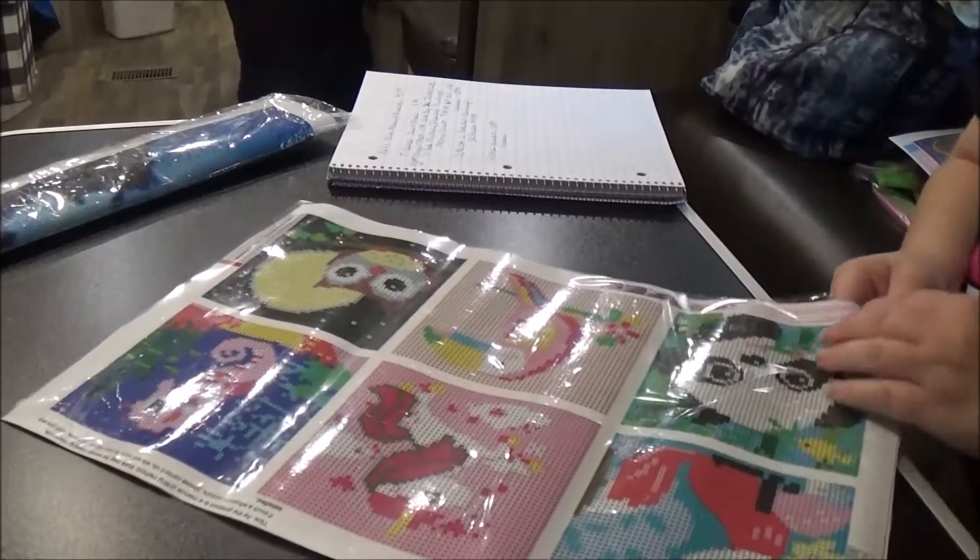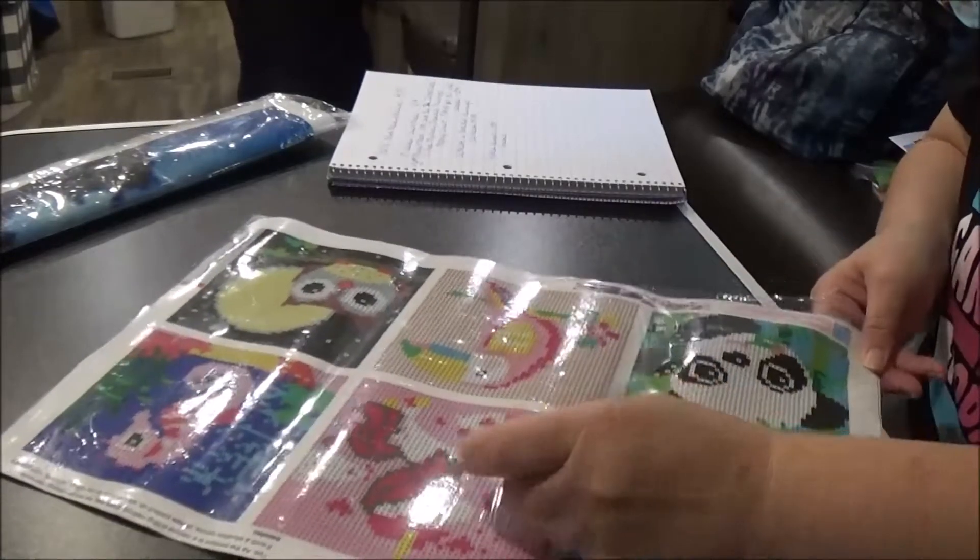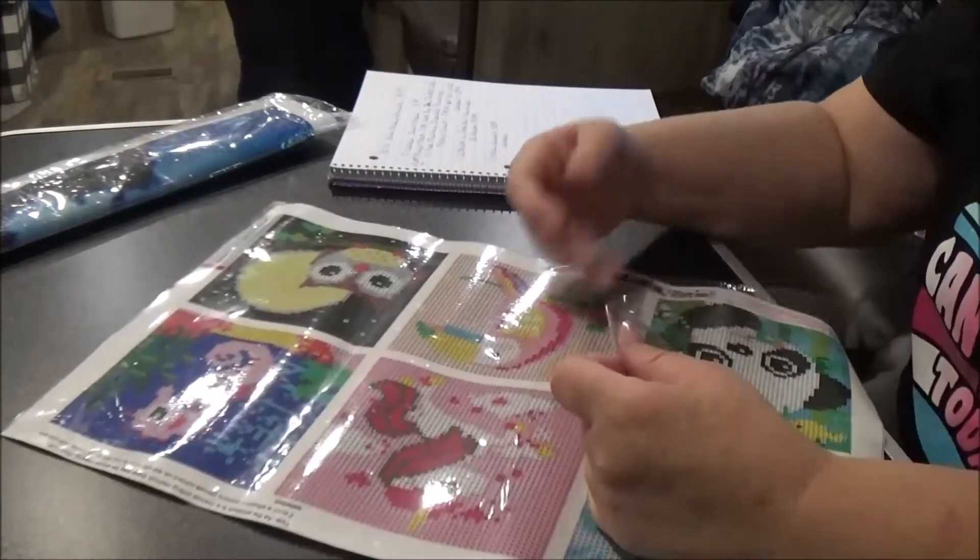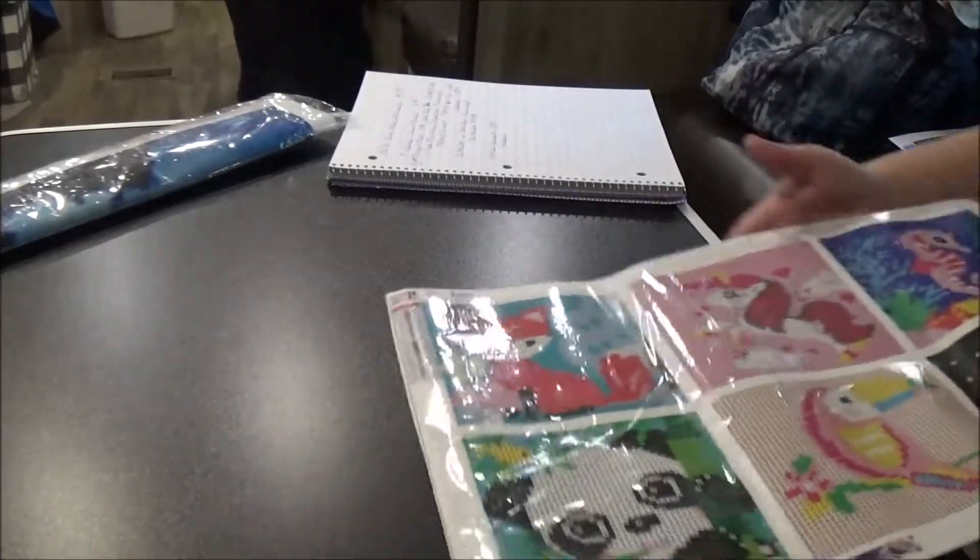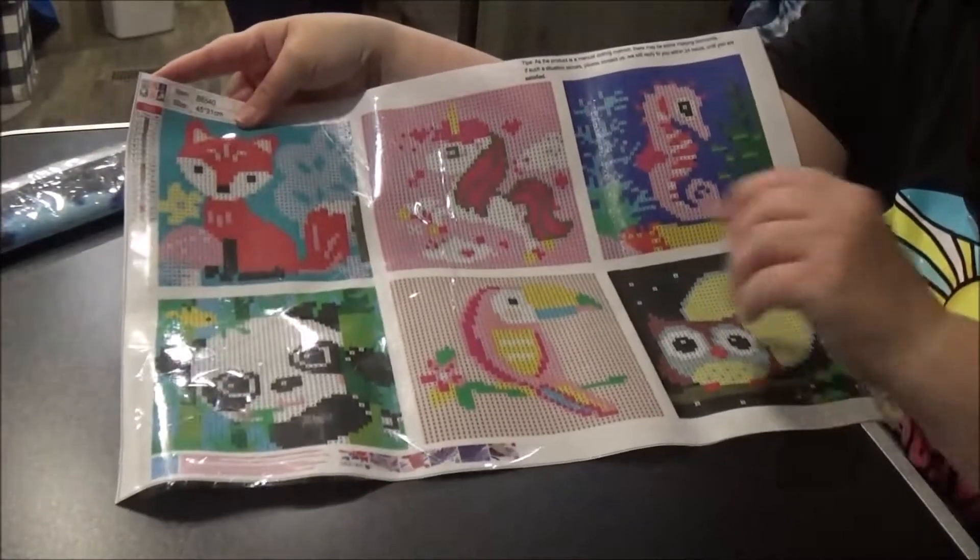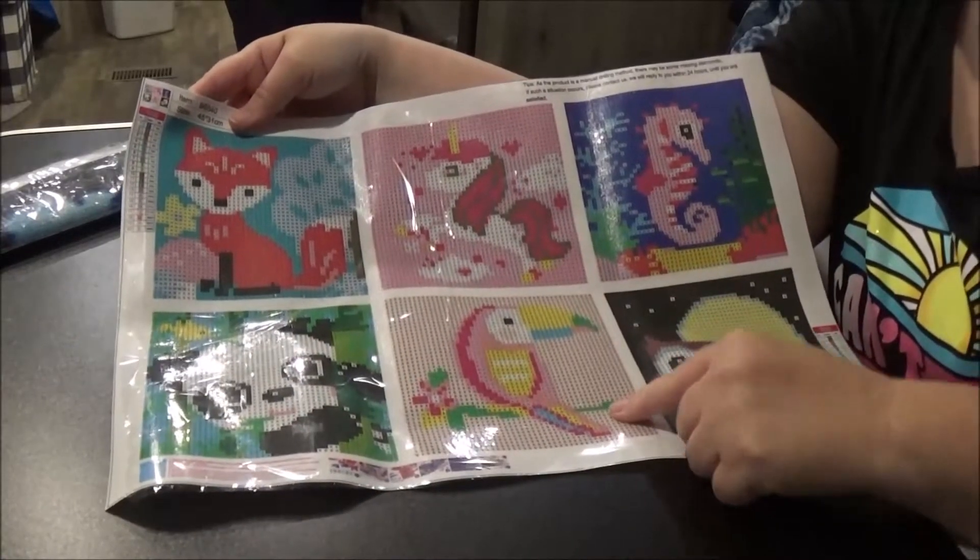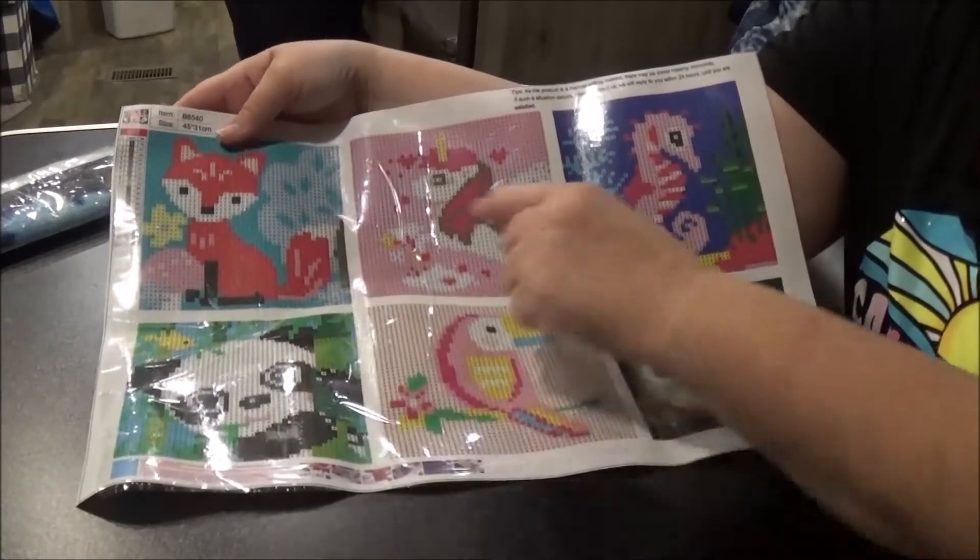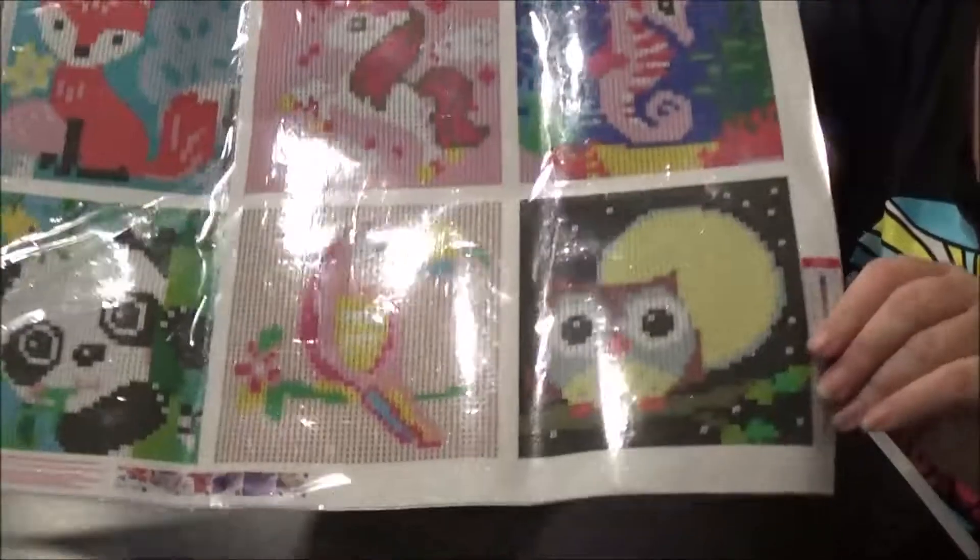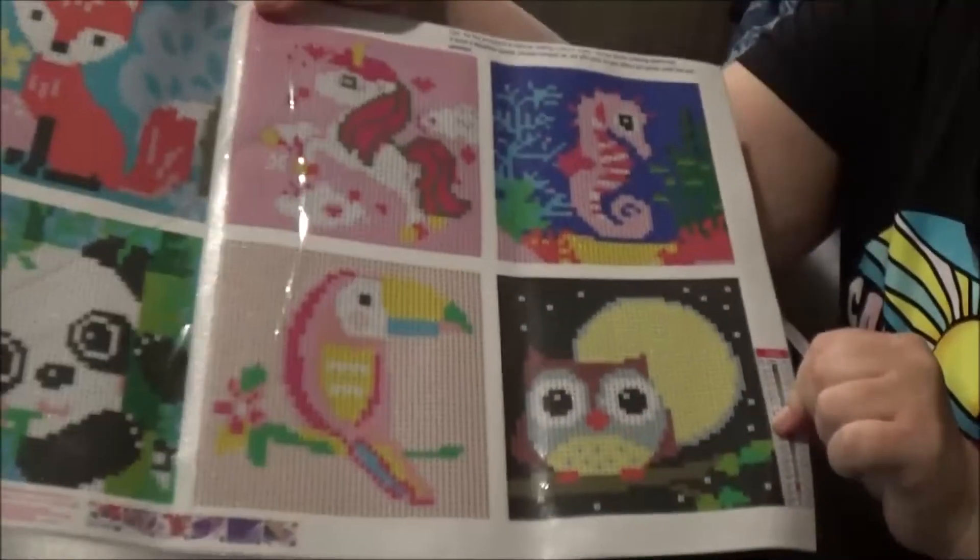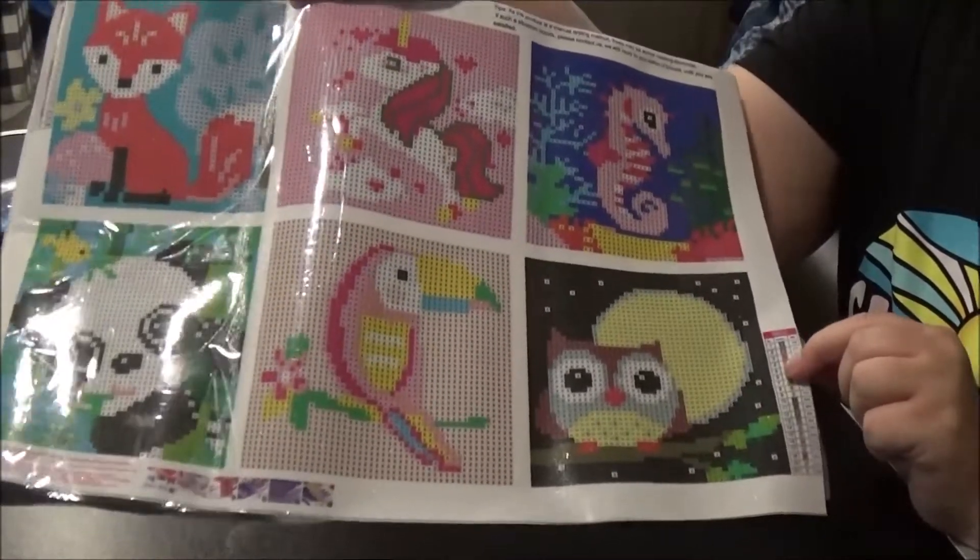It's kind of hard to straighten it out whenever the plastic's not cooperating with you because it tore. But anyway, here's the painting. It's got the six little different ones. I think they are just so cute. It's got a toucan, it's got a panda bear, a fox, a unicorn, a seahorse, and my favorite one is the owl. You would think my favorite one would be the unicorn because I love pink so much, but I really like this owl for some reason.